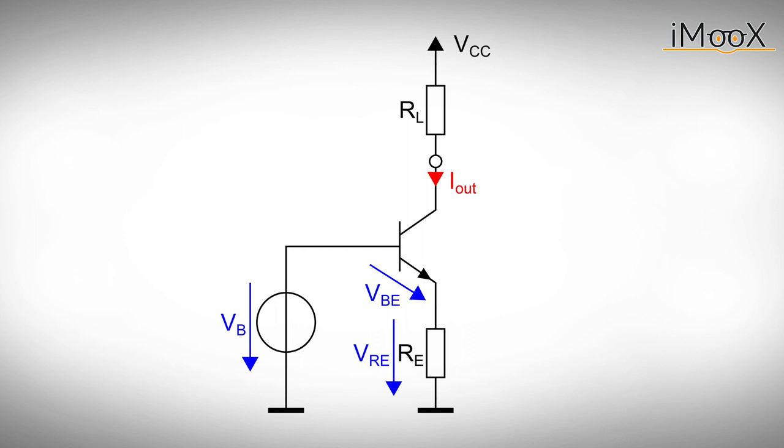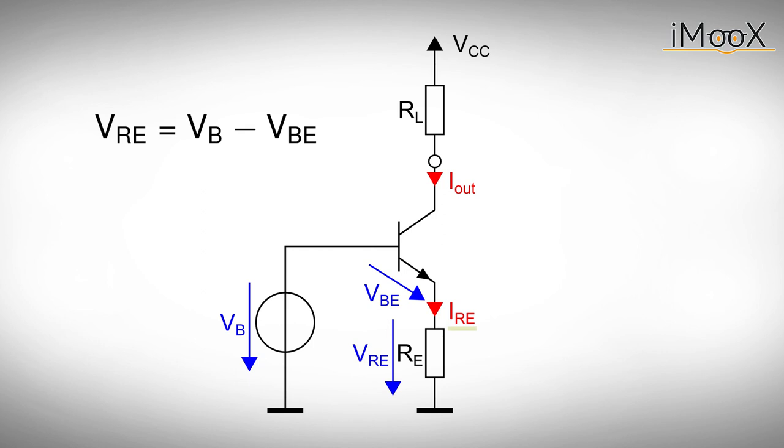Assuming a constant base emitter voltage VBE of 0.6 to 0.7 volts we can calculate the voltage at resistor RE. The current IRE flowing through this resistor equals VB minus VBE over RE. If the voltage VBE remains constant so does the current IRE.